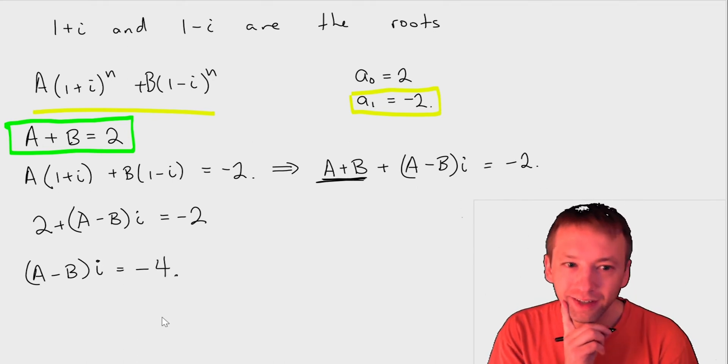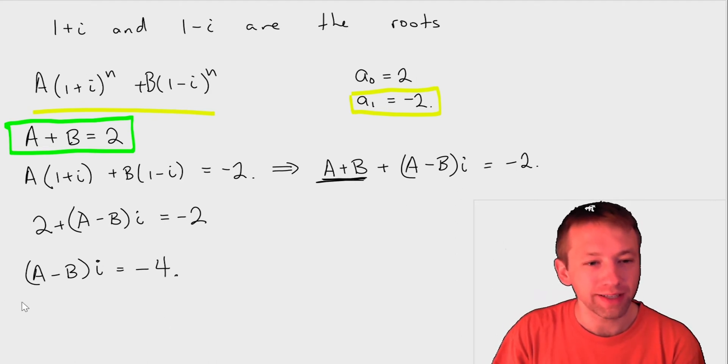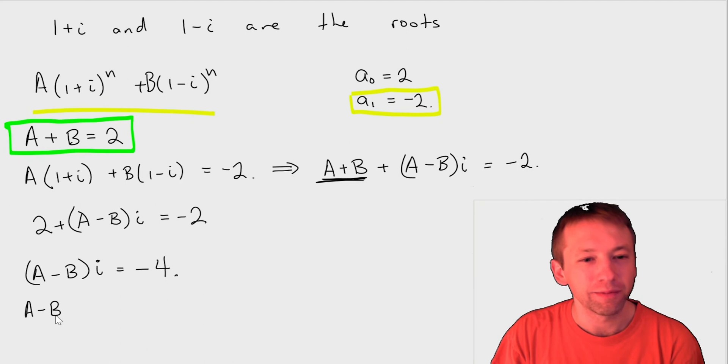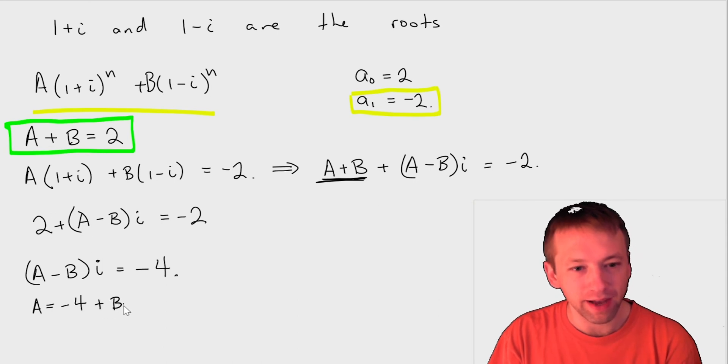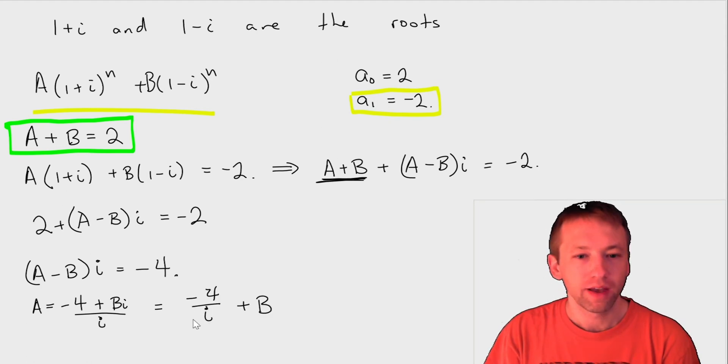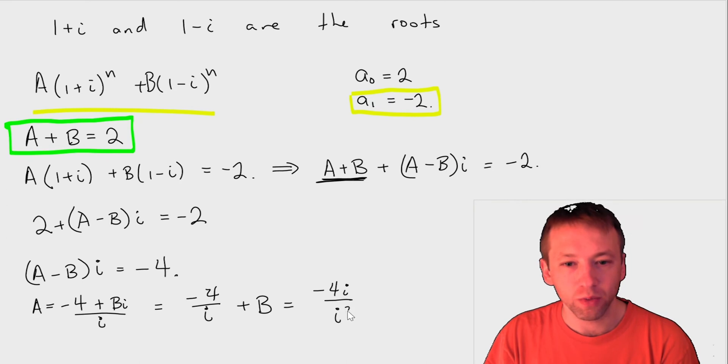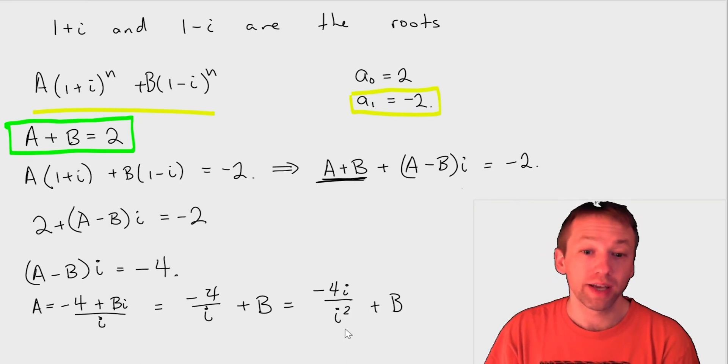But this is a little interesting because that tells us that A - B is equal to, well, this tells me, so if I solve this for A, this tells me that A is (-4 + Bi) all divided by i, which is -4/i + B. If I multiply this fraction on the top and the bottom by i, this is -4i over i² plus B. I know that i² is -1. So this gives me that A is the same as B + 4i.